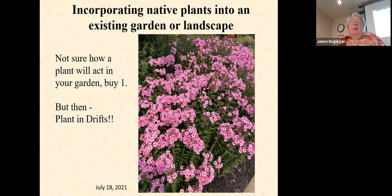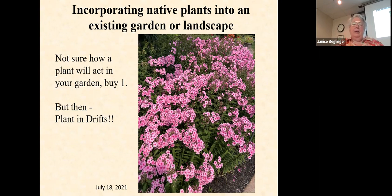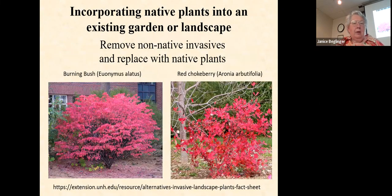Any garden magazine will say plant in drifts because that gives you your color. Butterflies and bees don't want to go from a single flower and travel ten feet down the road to find another one. But if you're not sure how a plant will act in your garden, buy one and try it out. Then the next year, plant in drifts. Here we have Phlox paniculata, which is a native plant and beautiful in the summer — great for hummingbirds, bees, and bumblebees. It's just a great plant.